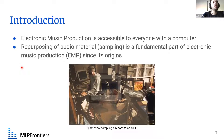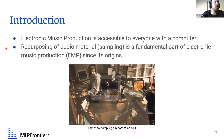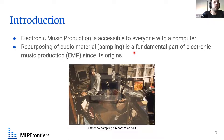Electronic music production is very accessible to everyone who has a computer nowadays. You can freely obtain a digital audio workstation — software that allows you to make music even without much music theory knowledge. One core component that enables this is sampling, which is basically taking already pre-recorded audio material and using it in your productions. This practice is fundamental to electronic music and has been there since its origins.